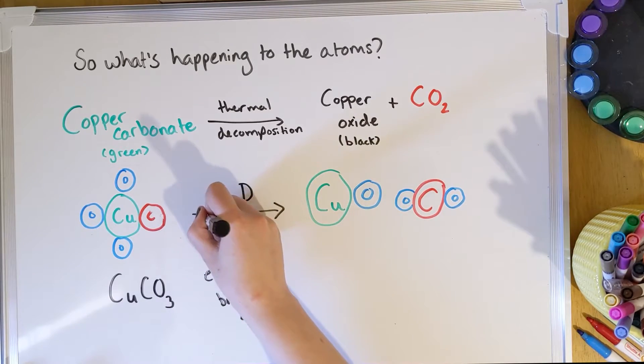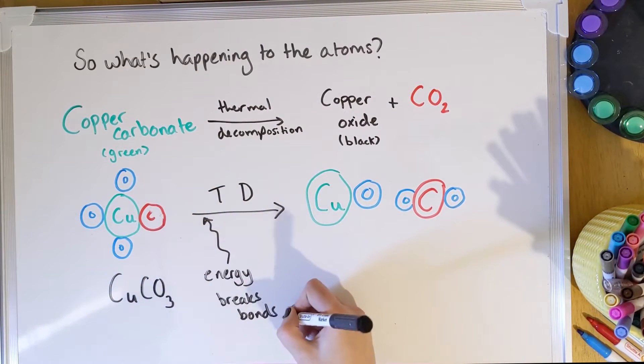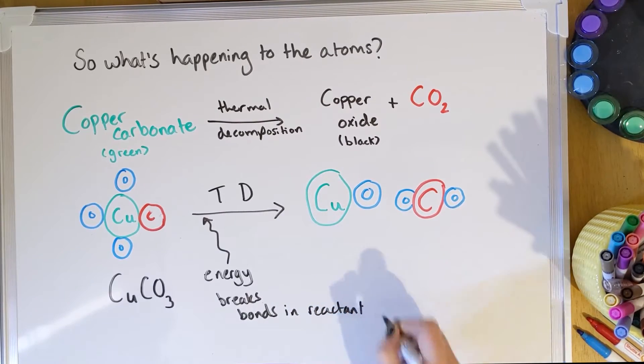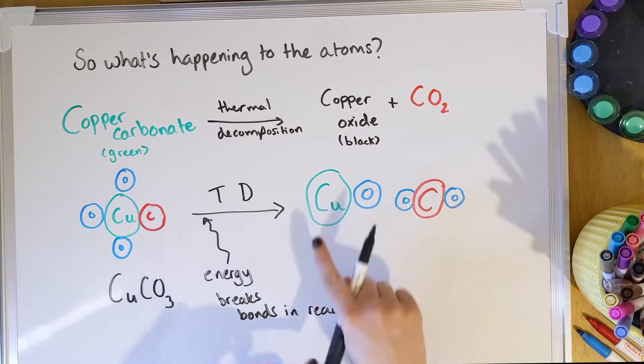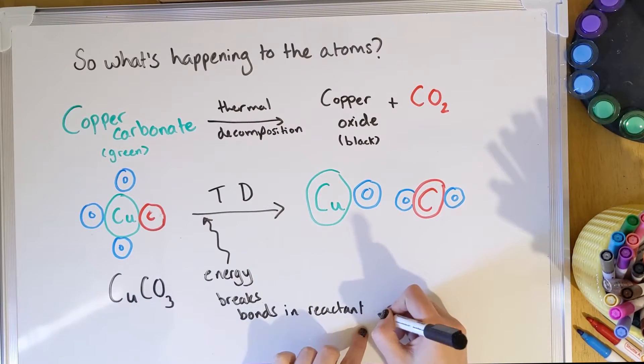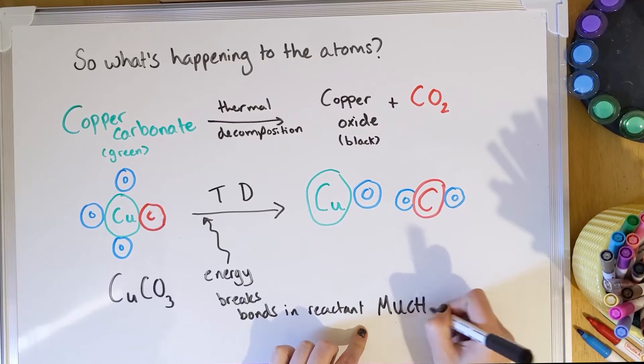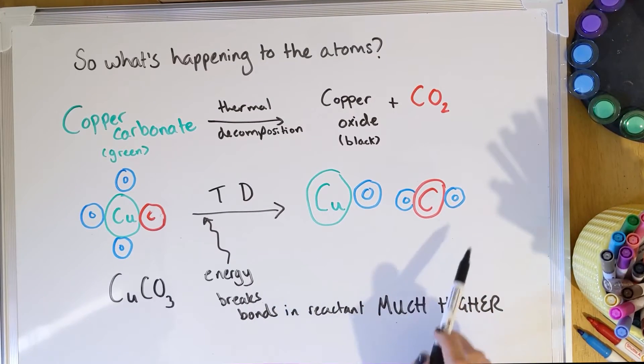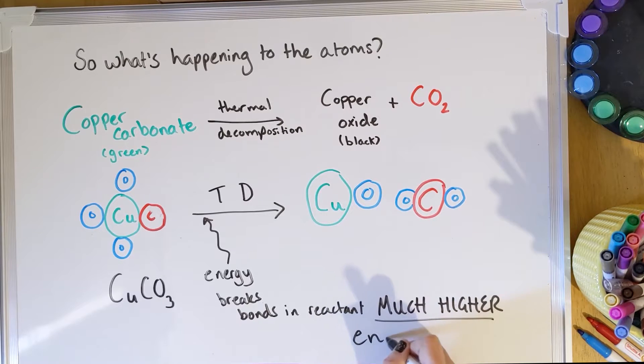So we've taken the energy that's being put in through heating - it is what's breaking these bonds. So the energy being put in breaks the bonds in the reactant. And then some more energy is used to form the products, though the energy to break the bonds is much higher than any energy that's used to form these products. And then that is more evidence that this is endothermic.